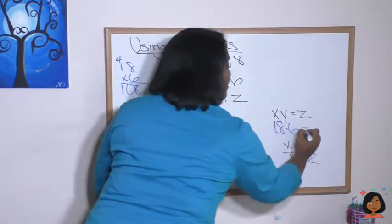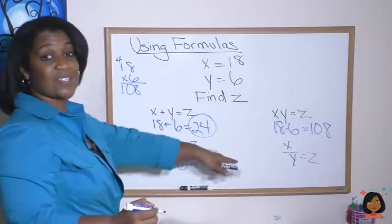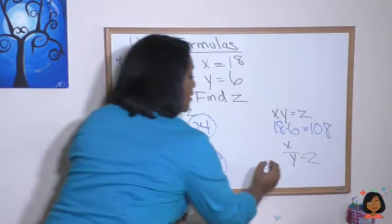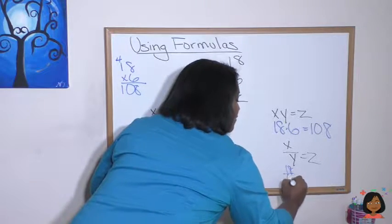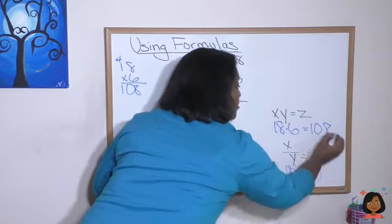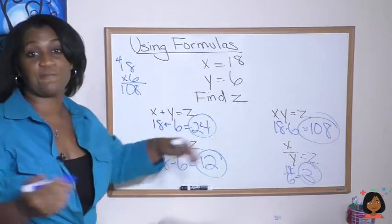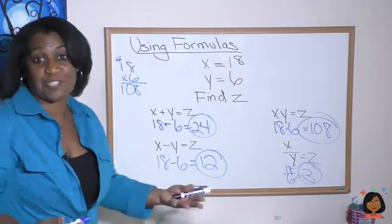And our last one, x divided by y equals z. 18 divided by 6, so we know our answer is 3. So same values but four different formulas give us four different answers and that's it.